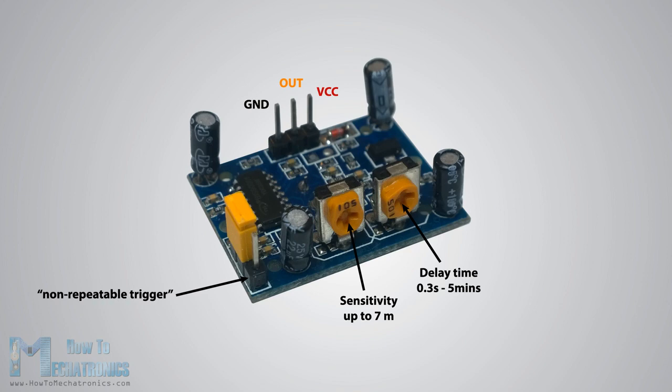When the sensor output is high and the delay time is over, the output will automatically change from high to low level.